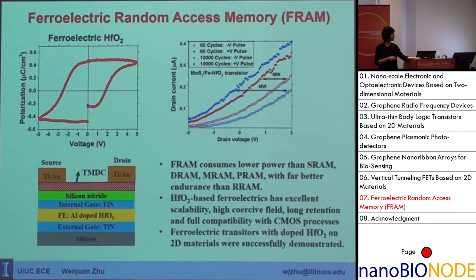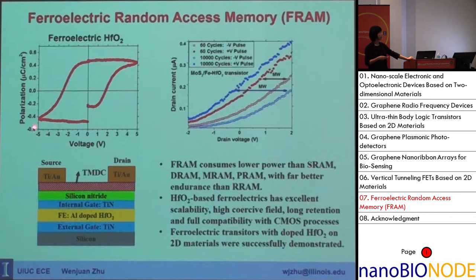An additional advantage of this material is its high coercive field and long retention time. Recently, we successfully made ferroelectric transistors with doped hafnium oxide on 2D materials like molybdenum disulfide, demonstrating reasonable polarization and sizable memory windows.